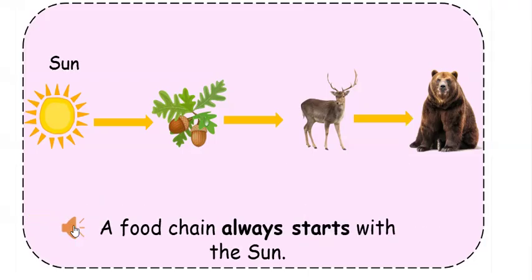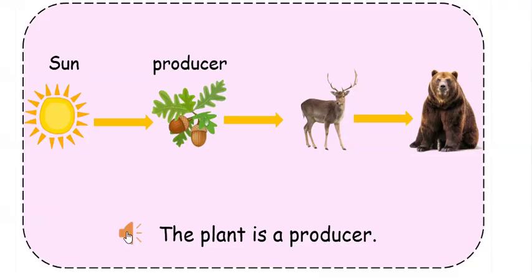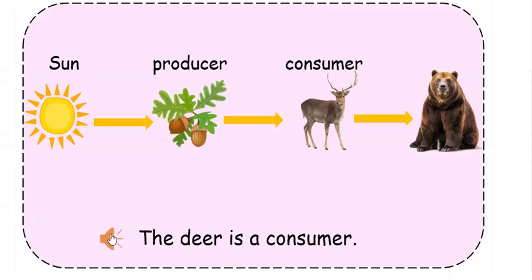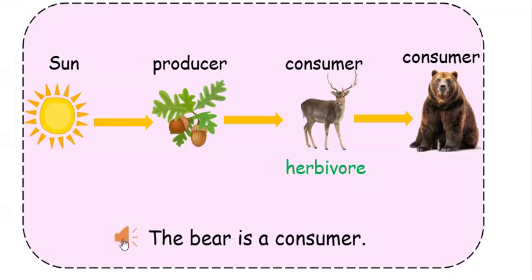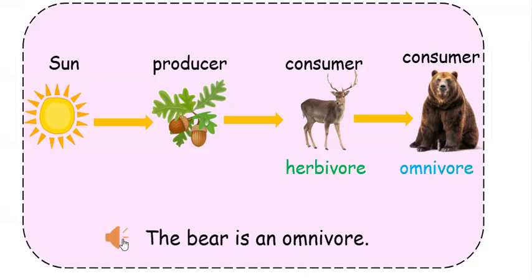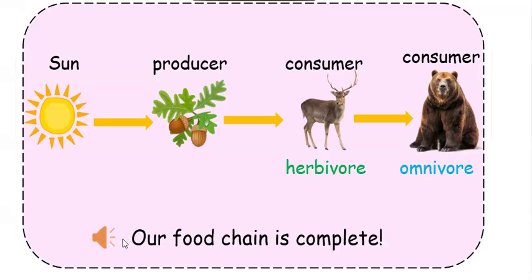A food chain always starts with the sun. The plant is a producer. The deer is a consumer. The deer is a herbivore. The bear is a consumer and an omnivore. Our food chain is complete.